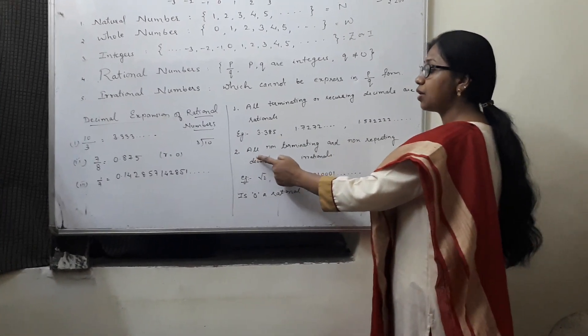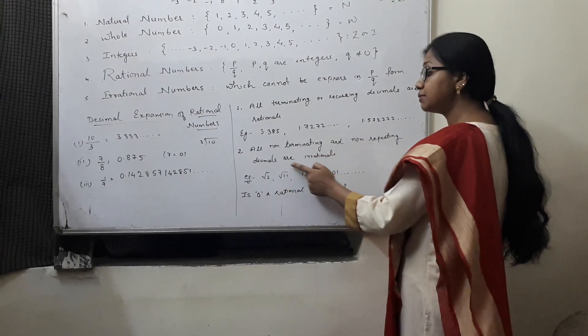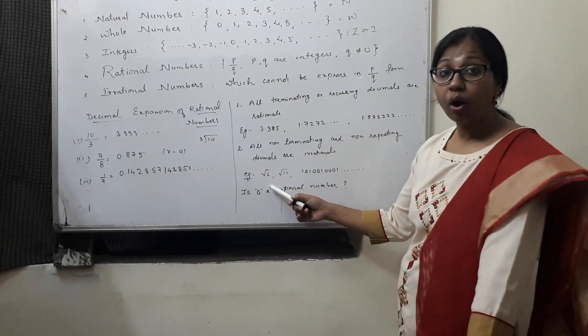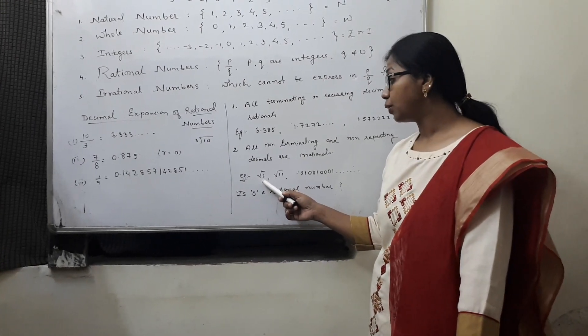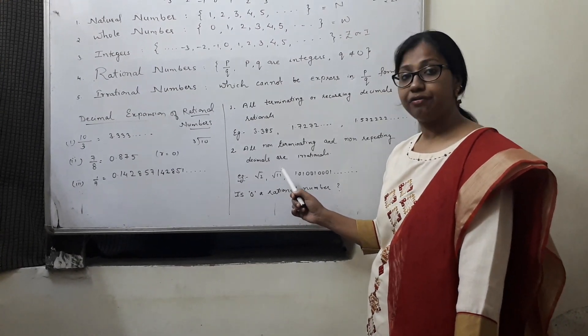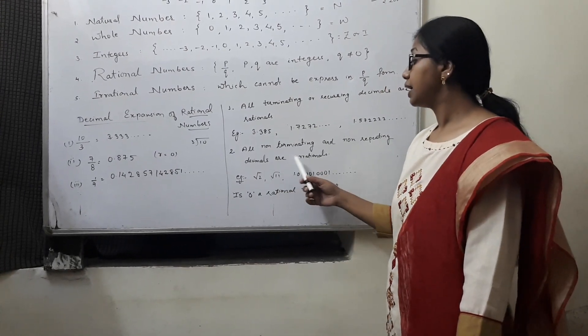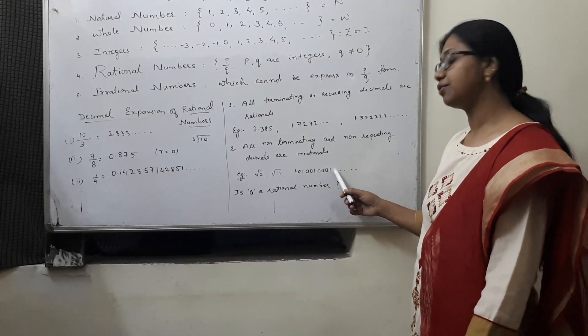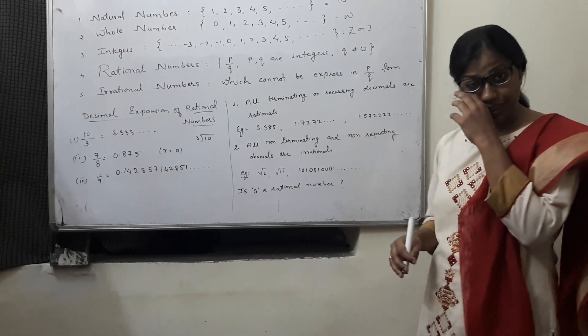Irrational numbers, all non-terminating and non-repeating decimals are irrational. The examples are all square root of non-perfect numbers, like root 2, root 11, root 5, root 17, root 24, all these are irrational numbers. 1.01001001001, all these are irrational numbers.